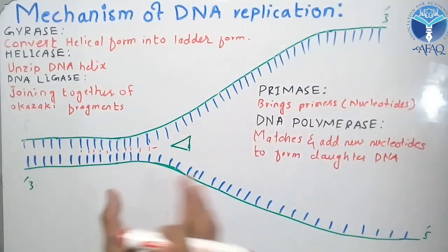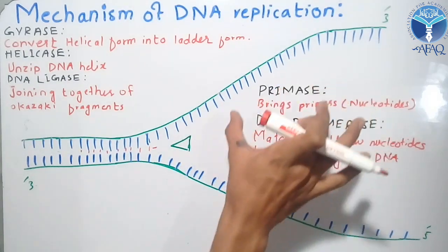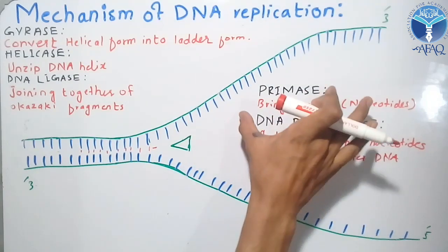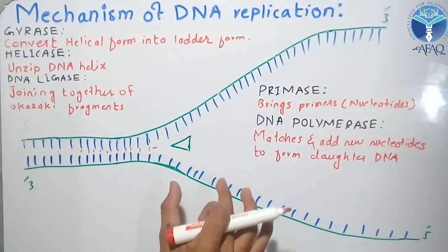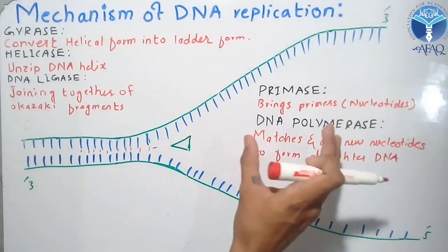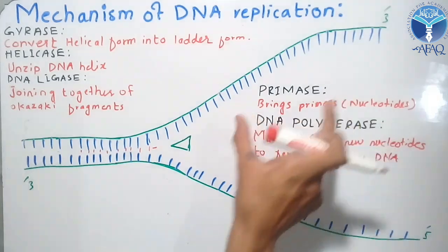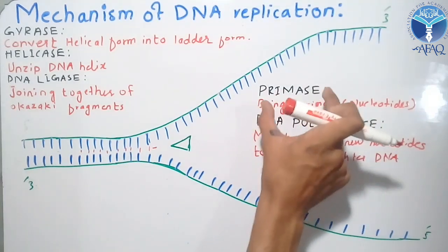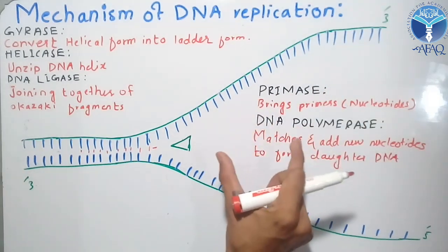Primase is the most important enzyme because DNA replication starts due to primase. Primase brings primers to the leading strand and then DNA replication starts. The function of primase is to bring primers - mainly we call this RNA primase because the nucleotides are in the form of RNA single strands.